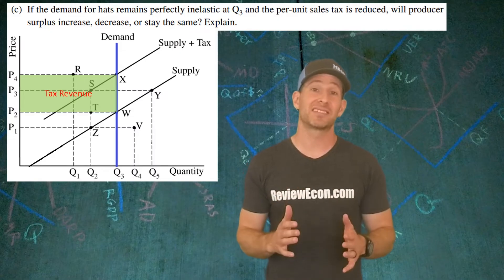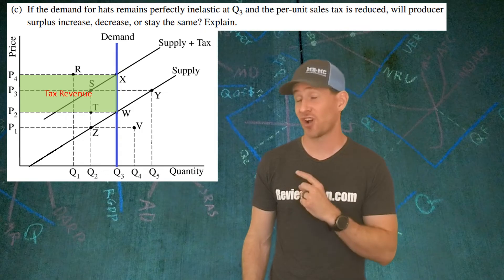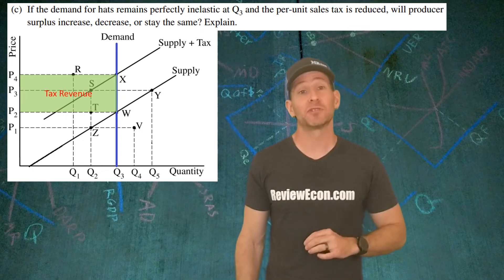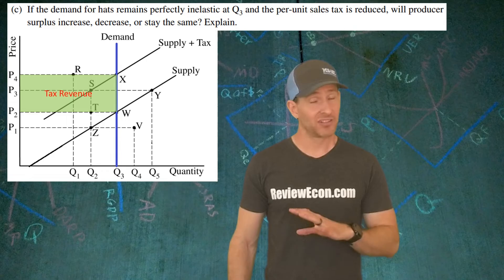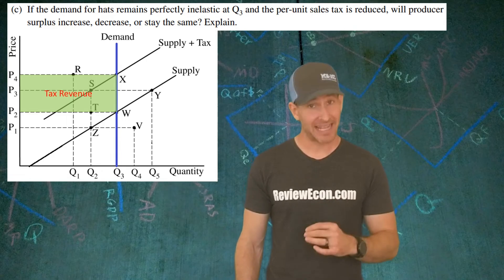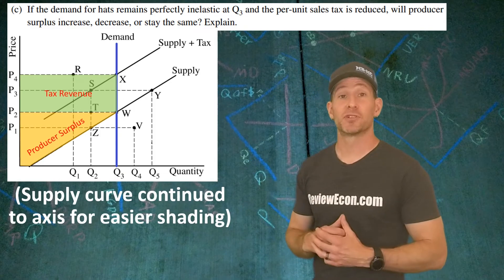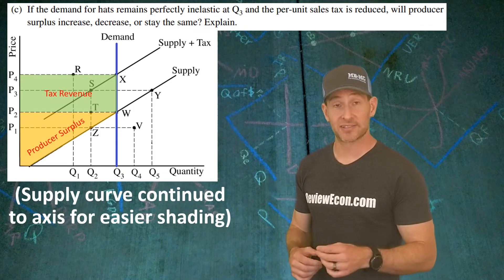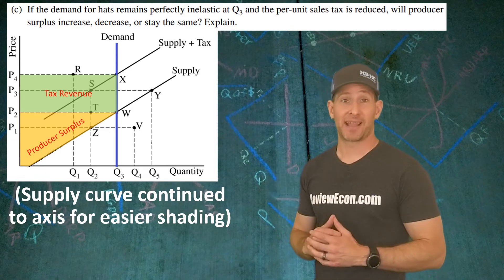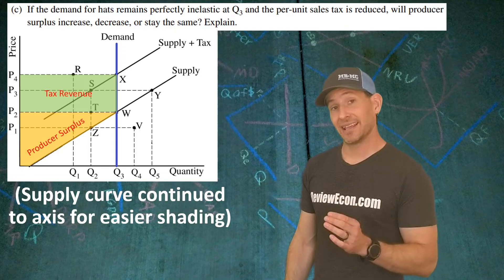For part C, we're looking at the impact of a decrease in the tax on this good and what that will do to the producer surplus. Just like most of these, when in doubt, graph it out. That's how I would figure this one out. Here is where the producer surplus was with that vertical demand curve at the old amount of the tax. If we reduce the amount of the tax,